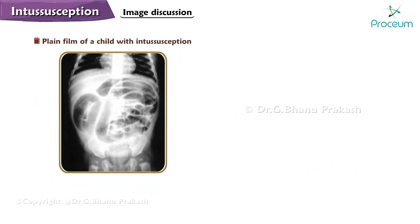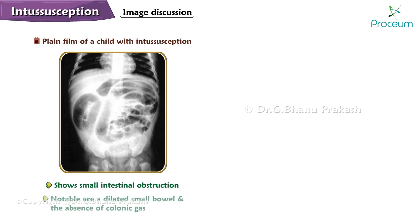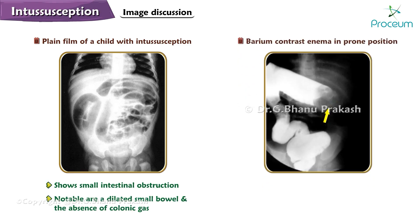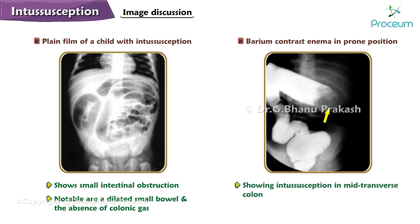Here is a plain film of a child with intussusception that shows small intestinal obstruction. Notable are a dilated small bowel and the absence of colonic gas. Here is also an image of a barium contrast enema showing intussusception in the mid-transverse colon, with the patient in a prone position.